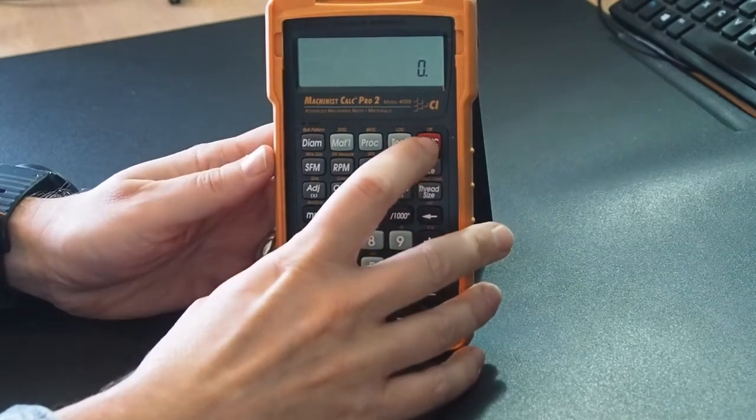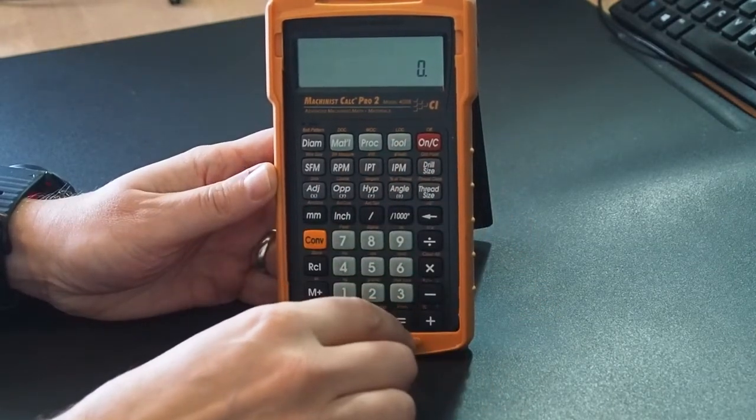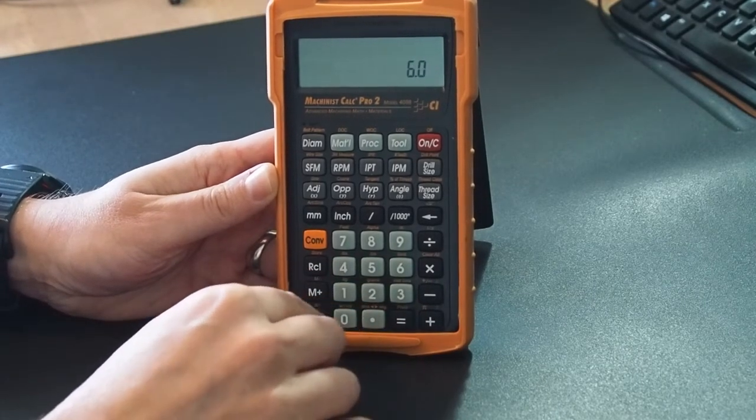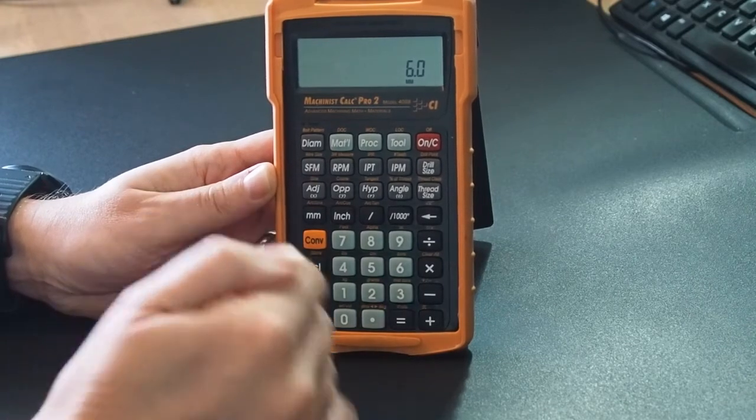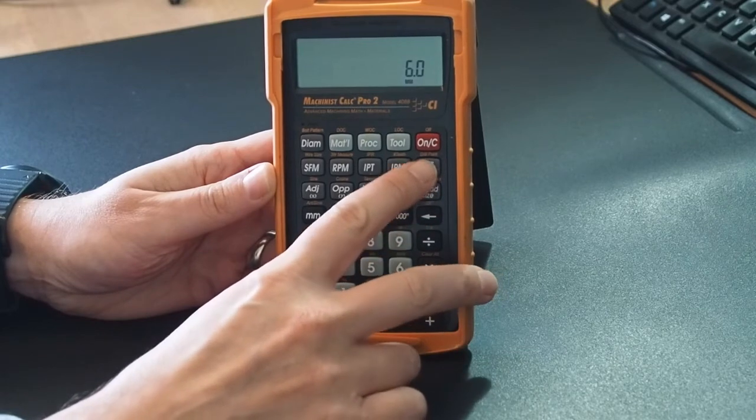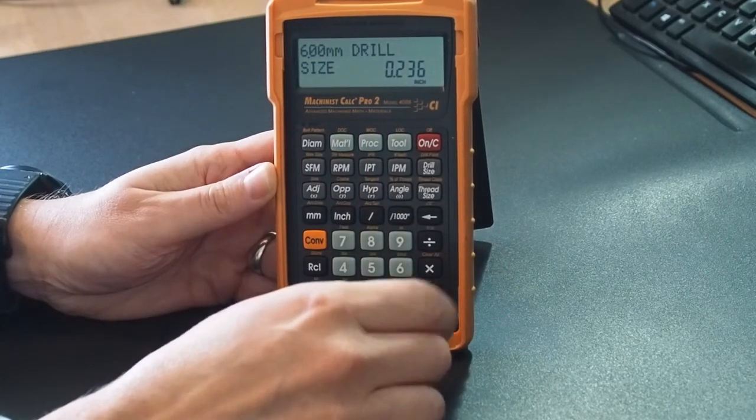Right, so let's just make sure the calculator is turned on. What we're going to do is convert a 6mm drill bit. I'm going to enter in 6.0 and then press the millimeter button. Then we're going to convert that into inches. The way we're going to do that is press this drill size button over here. I'm just going to press that and it immediately converts it into inches, which we can see on the screen.